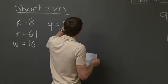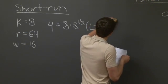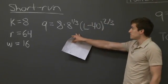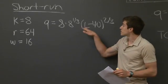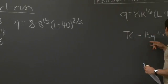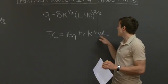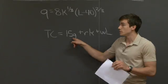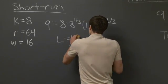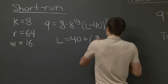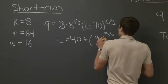Plugging in k equals 8 into the production function, we can solve for l in terms of q. This is useful because we will take this l and plug it into the total cost function so that our cost function is no longer in terms of k and l, but only in terms of q. Isolating l, we find that l equals 40 plus quantity q over 16 raised to the 3-halves.